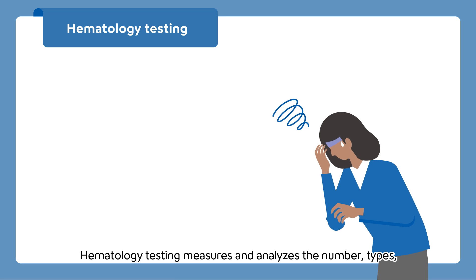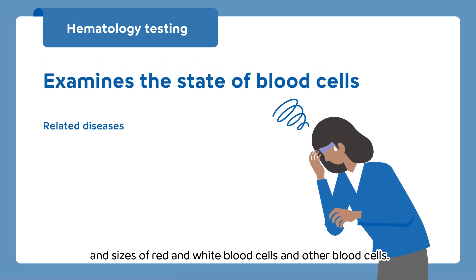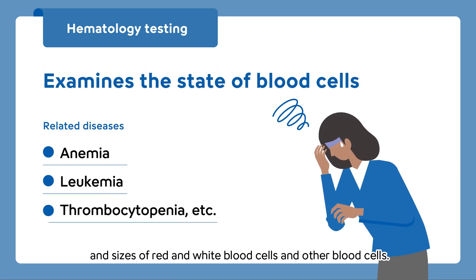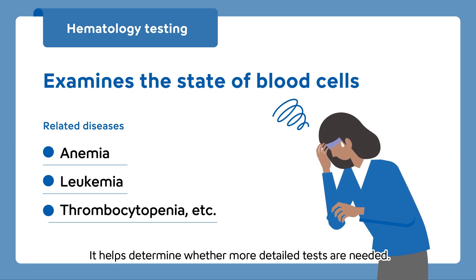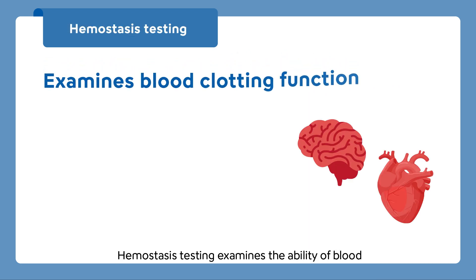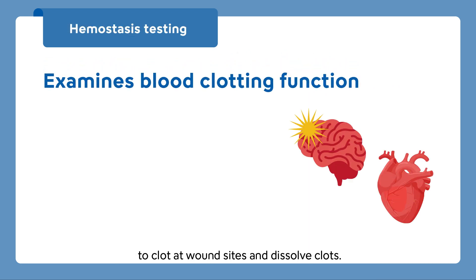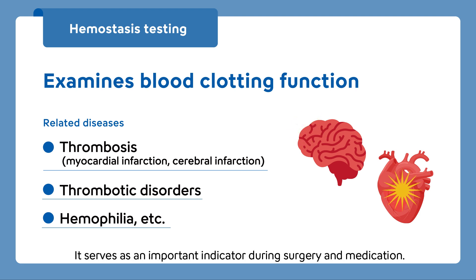Hematology testing measures and analyzes the number, types, and sizes of red and white blood cells and other blood cells, helping determine whether more detailed tests are needed. Hemostasis testing examines the ability of blood to clot at wound sites and dissolve clots, serving as an important indicator during surgery and medication.